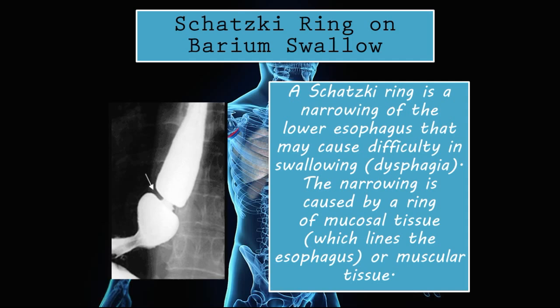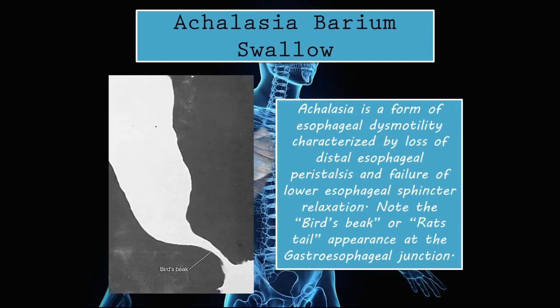Achalasia on barium swallow: achalasia is a form of esophageal dysmotility characterized by loss of distal esophageal peristalsis and failure of the lower esophageal sphincter to relax. Note the bird's beak or rat's tail appearance at the gastroesophageal junction. The peristalsis in the lower part of the esophagus is lost, and there is a failure of the lower esophageal sphincter — the LES — to relax.